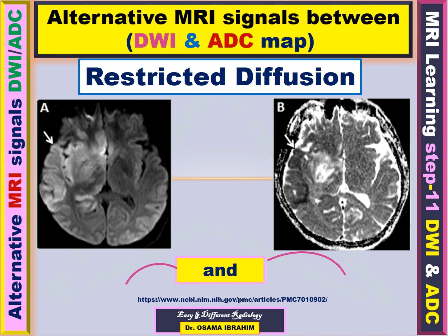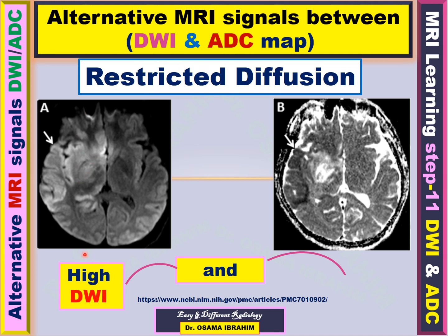As we talked before about restricted diffusion in the previous two presentations, to diagnose the restricted diffusion you should have high diffusion-weighted image MRI signal and low ADC map. In this presentation, I will talk about other possibilities between the diffusion-weighted image and ADC map signals.